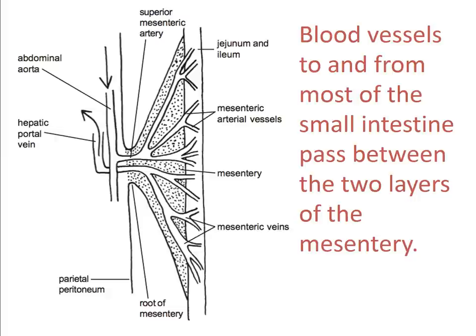Major blood vessels supplying the gut run behind the peritoneum — they are retroperitoneal. Branches of the aorta project through the root of the mesentery and travel through the mesentery to the small intestine, providing the essential arterial blood supply for oxygen and nutrients. Blood then circulates through the capillaries in the gut, and venous branches drain from the gastrointestinal tract back through the mesentery toward the root of the mesentery.